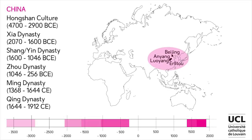Domain 2: China. The important historical periods include the Hongshan culture, the Xia dynasty, the Shang-Yin dynasty, the Zhou dynasty, the Ming dynasty and the Qing dynasty. The important sites include Erlitou, Anyang, Luoyang and Beijing.